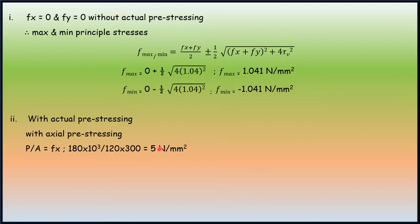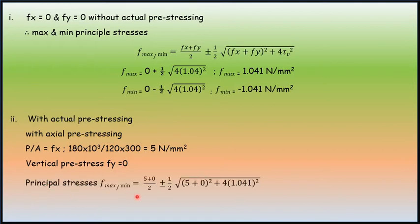We get fx equals 5 N per mm square. Vertical pre-stressing equals 0. There is no pre-stressing in vertical direction of the rectangular section. Calculating principal stresses with the same formula and substituting the values, fx is known, fy is 0. fmax becomes 5.2 N per mm square. So this was the determining the principal stresses problem.